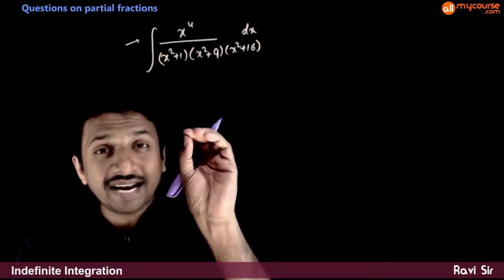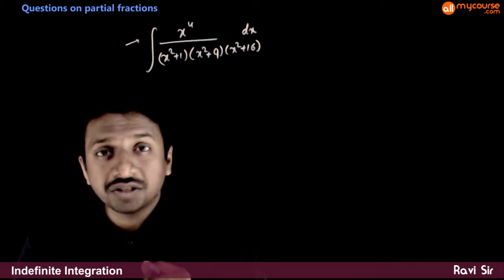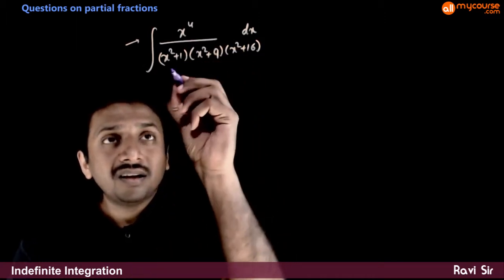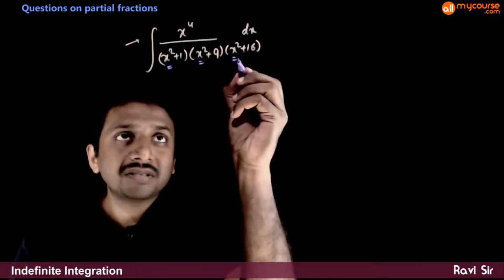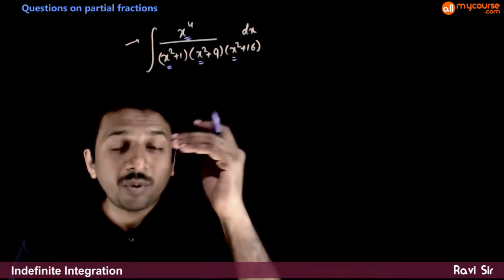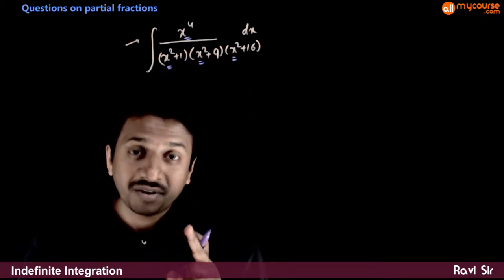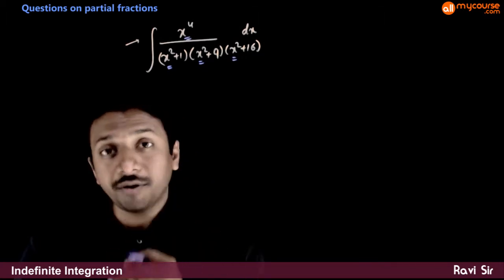This is a slightly special question in this topic of partial fractions. Here, all the terms that you have are made up of x square. So you don't have any odd power terms here. That's a very important thing that you can observe here.